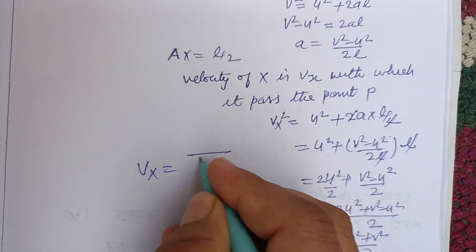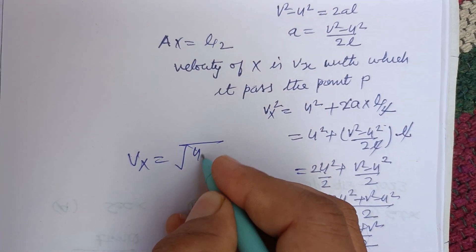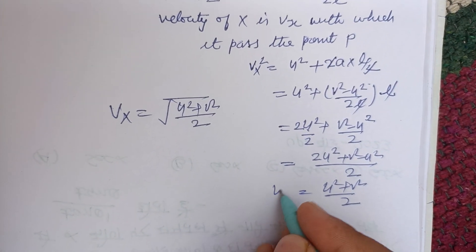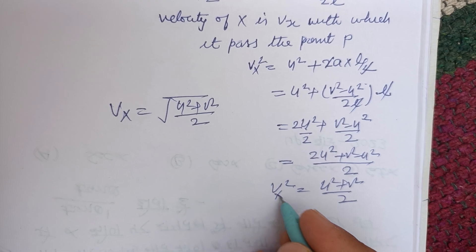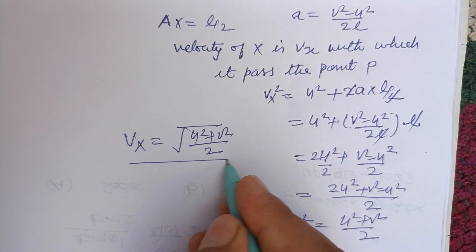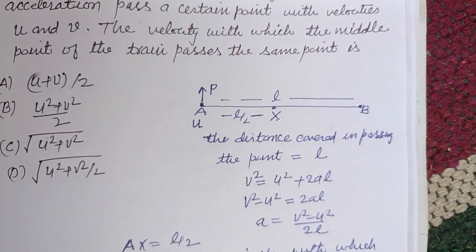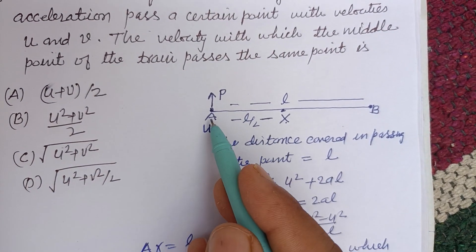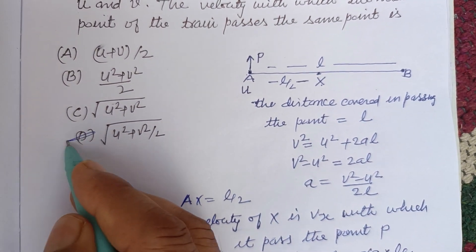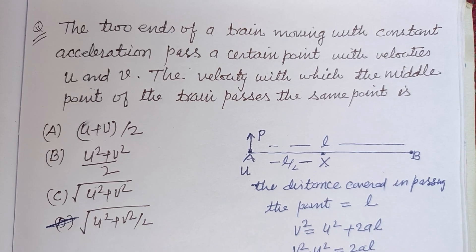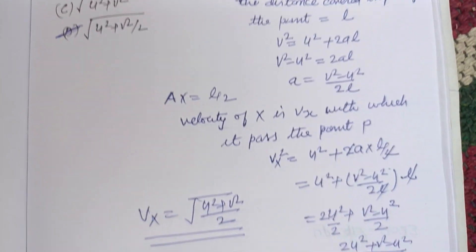Therefore Vₓ = √[(u² + v²) / 2] when we take square root of both sides. So this is the velocity of the midpoint of the train by which it passes point P. So D is the correct answer of this question. I hope you got it. Please like the video, subscribe the channel, thanks for watching.